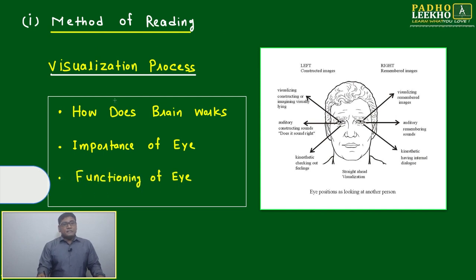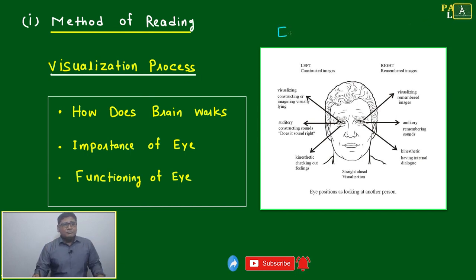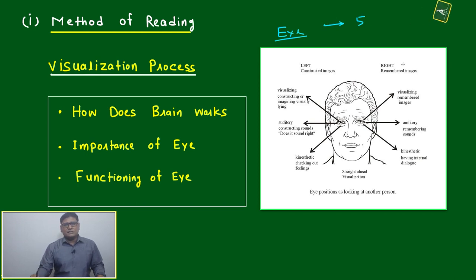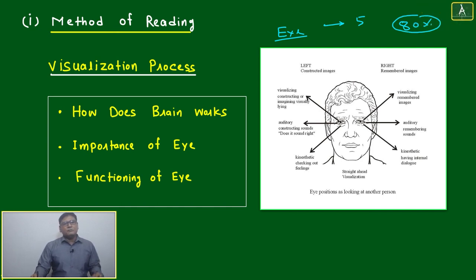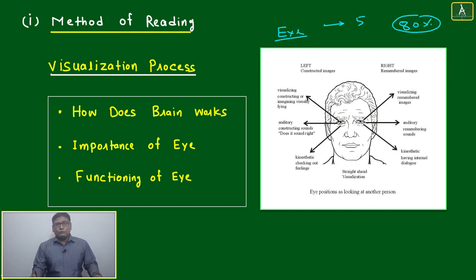In method of reading, the first thing we must be careful about is the visualization process, because reading is a visual process. The eye is the most important sensory organ of our body. We have five senses, and the eye is most important because eighty percent of knowledge — eighty percent of things — we perceive through our eyes.